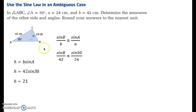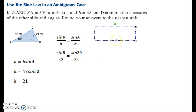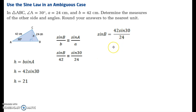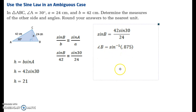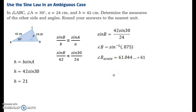Substituting values: side B is 42 centimeters, sine of A is sine 30, and side A is 24. Rearranging for sine B, we get 42 sine 30 over 24. We then take the inverse of this — this value is equivalent to 0.875. Taking the inverse to find angle B, we find that it is equal to approximately 61 degrees. Notice that this is an acute angle measure.